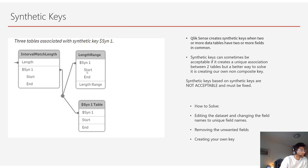If you know that you have two fields that need to be combined to make an association, make the association yourself. How can you get rid of the synthetic key? First, it's because the two fields are named the same. So the first way is by changing the field names — for example, instead of 'start' and 'end', you could change them to something like 'start of length range', so you'd only have one connection and the synthetic table would disappear.